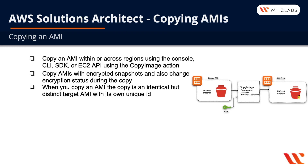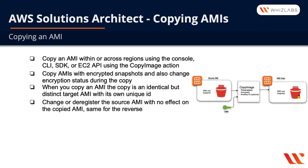When you copy an AMI, the copy is an identical but distinct target AMI with its own unique ID. The source AMI has an ID; you copy it, and the destination AMI has a different ID but is otherwise identical. You can change or deregister the source AMI with no effect on the copied AMI, and the same is true in reverse — changing or deregistering the copied AMI has no impact on the source AMI.